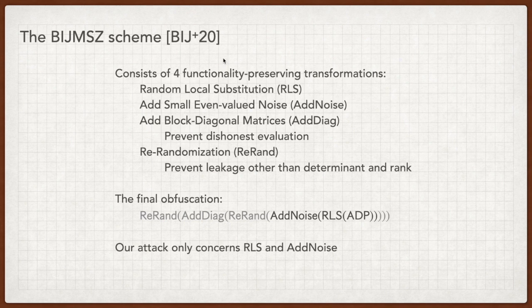Now, let me take a brief look at the BIJ+20 Obfuscation Scheme. The scheme consists of four different functionally preserving transformations: RLS, Adenoise, Addiag, and RERAND. Addiag is designed to prevent dishonest evaluation. And RERAND is designed to help hide information except determinant and rank. Since our attack never evaluates dishonestly and only uses determinant information, we can focus on RLS and Adenoise.